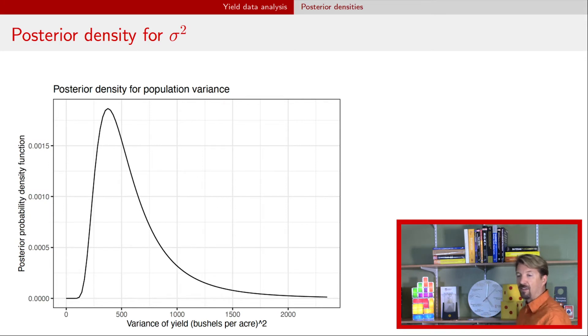Right, and so we can see that that variance ranges from something relatively small, about 200, to something relatively big, like 1,500.